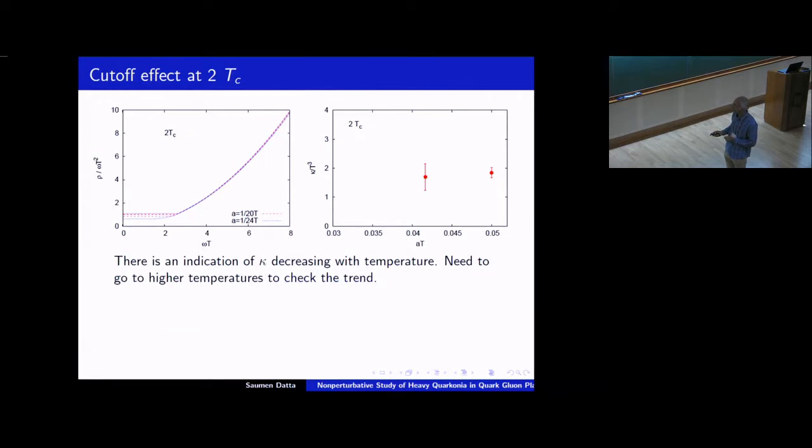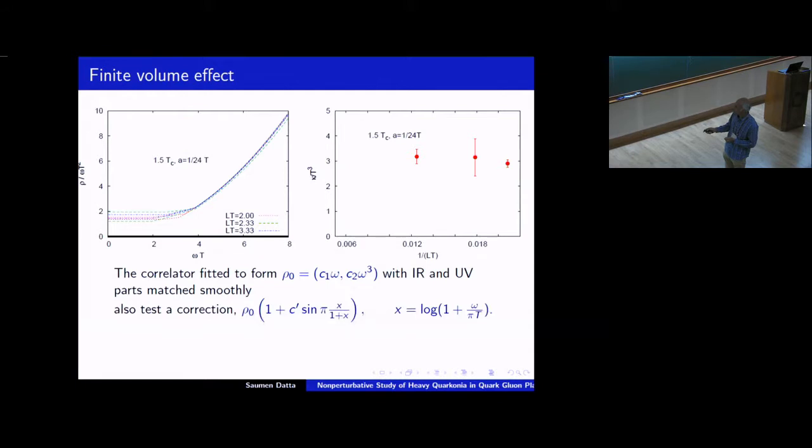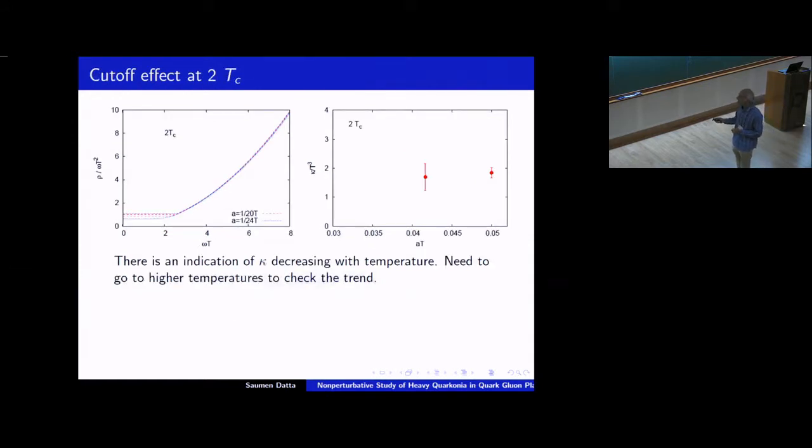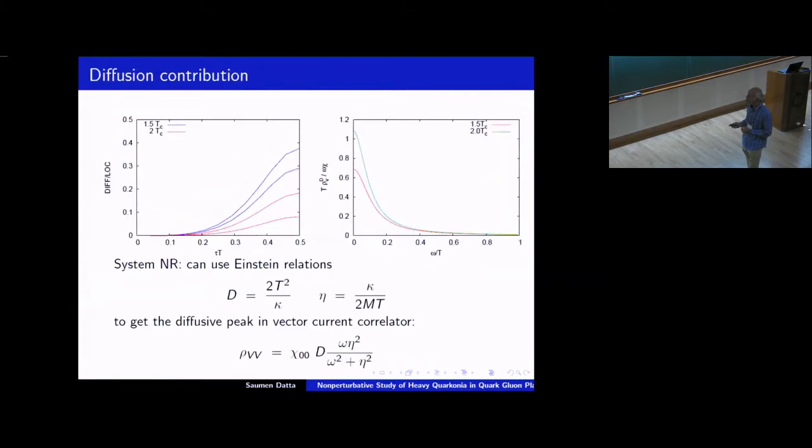Okay, go ahead to two Tc. As I said, one aim will be to go to a higher temperature. If you see the kappa by T cubed value here, it's about three, like I said, and the value that we get at two Tc is about two with large errors. So in principle, the 1.5 Tc and two Tc things may agree within error, but looks like there is a trend that the kappa by T cubed is decreasing with temperature. Of course, need to get the errors down here and also need to go to higher temperatures to check the trend. And again, here I show results from two lattice spacings. So both of these lattice spacings are pretty small. Both of them are in excess of 10 GeV, and so lattice spacing effects seem to be pretty small.